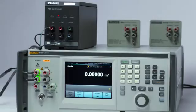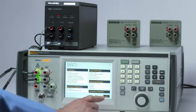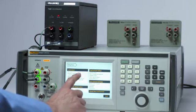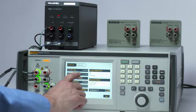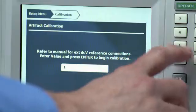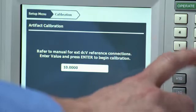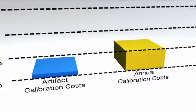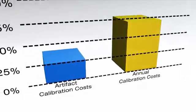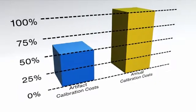The 5730A features artifact calibration to help you increase confidence and reduce cost of ownership. With just three standards, you can transfer external traceable values to the 5730A calibrator. At that point, it measures, verifies, and adjusts itself, reducing an eight-hour job to about one hour. Artifact calibration allows you to extend your calibration cycle up to two years before sending it to an accredited Fluke service center for a full verification.